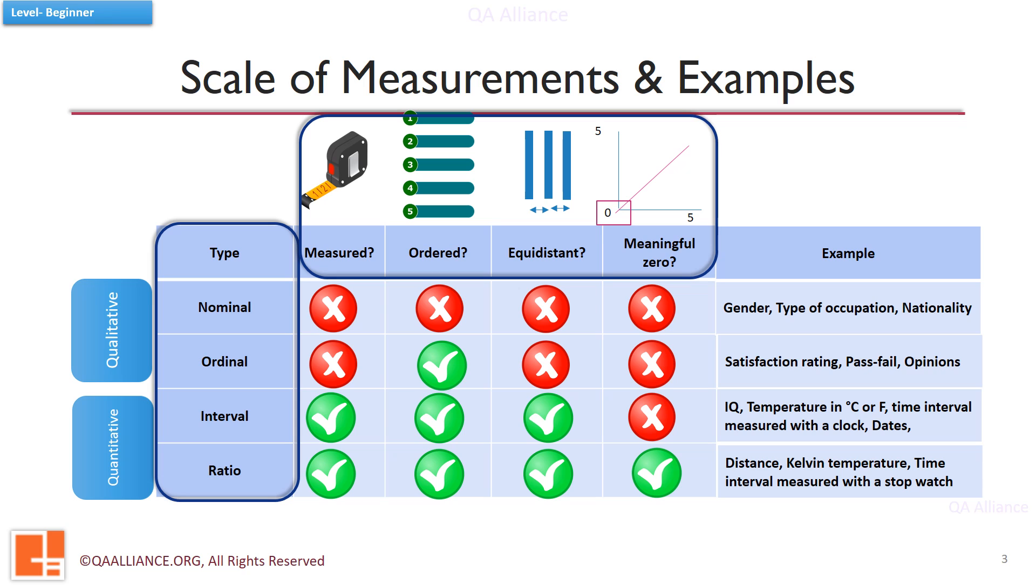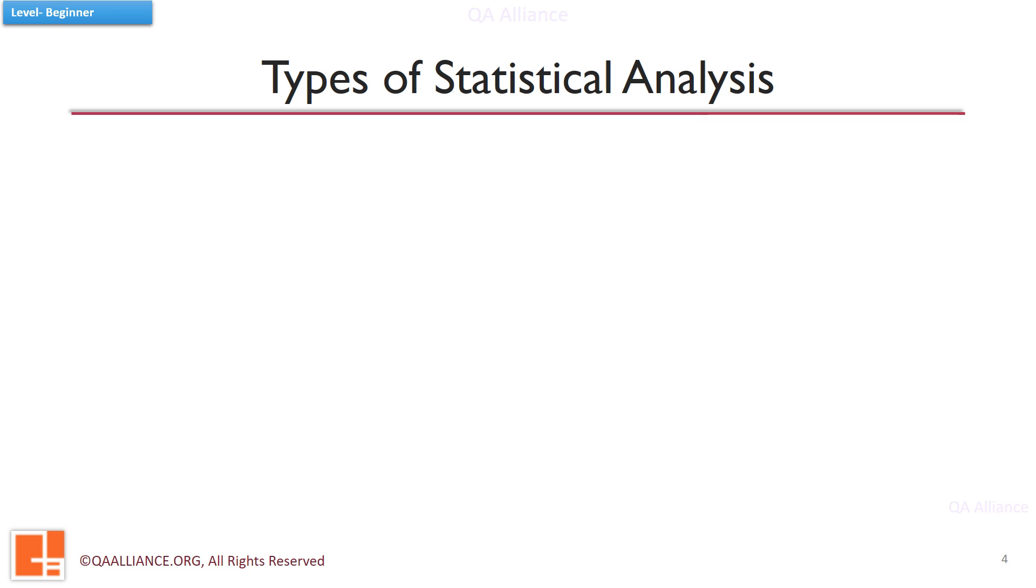Another important thing to notice here is that nominal and ordinal data are the examples of qualitative data, while interval and ratio data are the examples of quantitative data. Since we now know what is statistics and what is the data and various data types, let us quickly understand the two types of statistical analyses which can be performed on data.